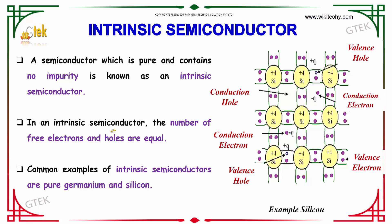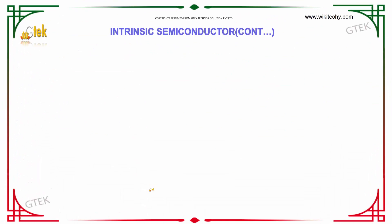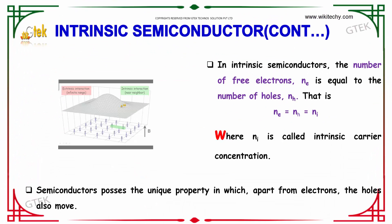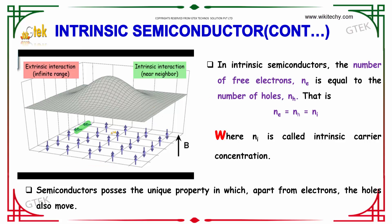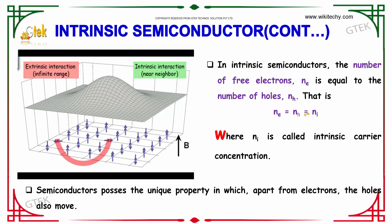In an intrinsic semiconductor, the number of free electrons and holes are equal. Semiconductors are pure germanium and silicon. In an intrinsic semiconductor, the number of free electrons ne is equal to the number of holes nh, that is ne = nh = ni, where ni is called the intrinsic carrier concentration.